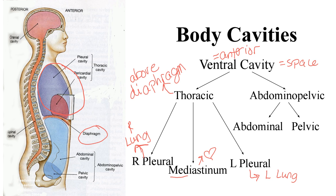The abdominal pelvic cavity is below the diaphragm — basically what we think of as our stomach area. This includes the area in the abdomen as well as the pelvis. In the picture it's shown in light blue, and the pelvic cavity is in a darker blue. Basically, when you hit the top of the hip bones, it becomes the pelvic cavity.